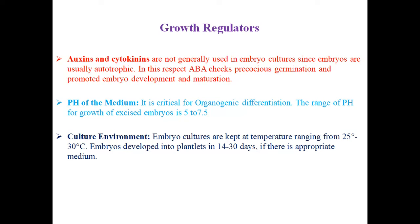Abscisic acid (ABA) checks precocious germination and promotes embryo development and maturation. The pH of the medium is critical for organogenesis; the growth range of excised embryo is pH 5 to 7.5. The cultural environment requires a temperature ranging from 25°C to 30°C, and the embryo develops into a plant in 14 to 30 days.